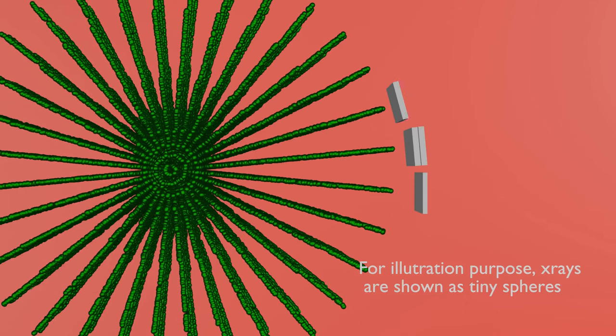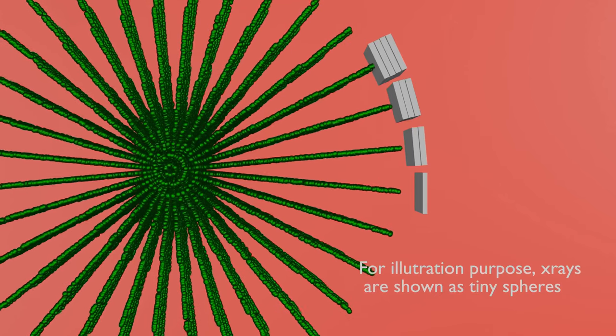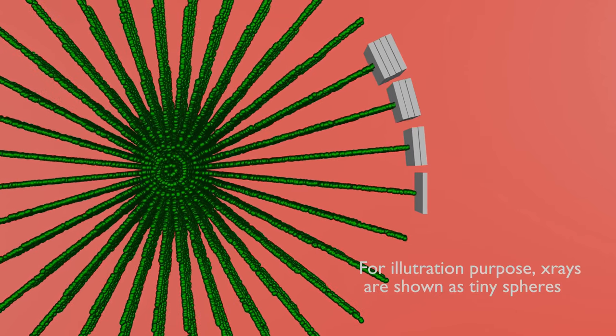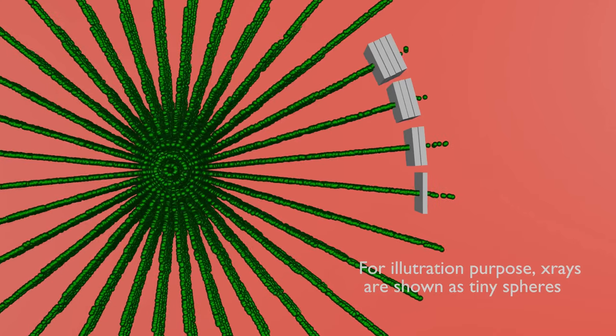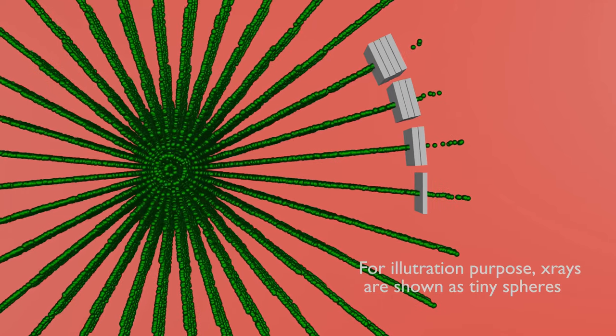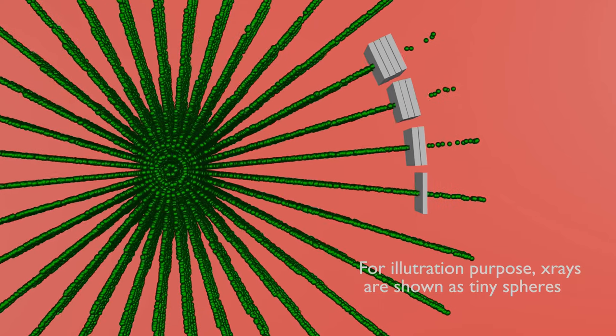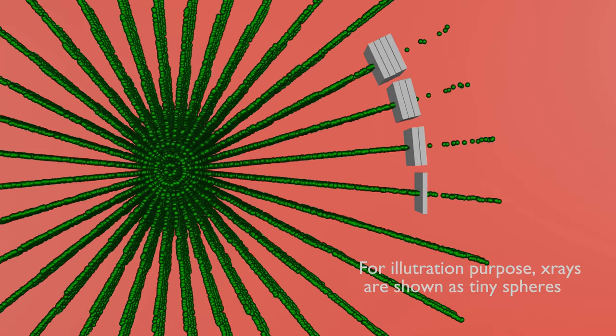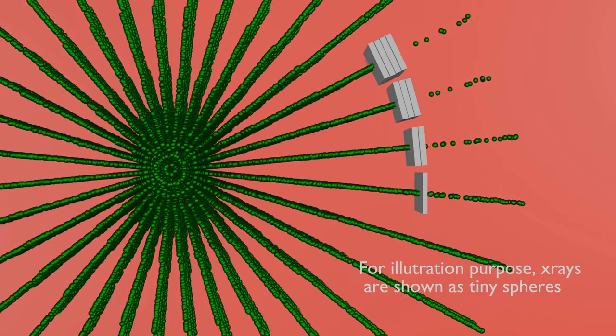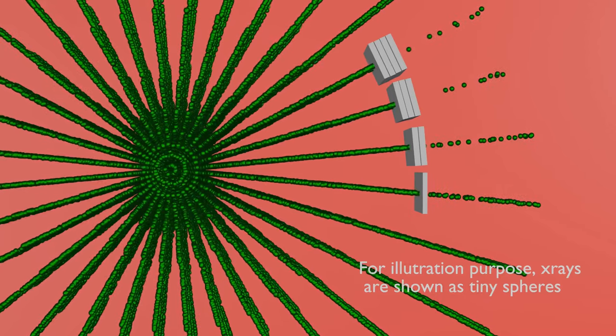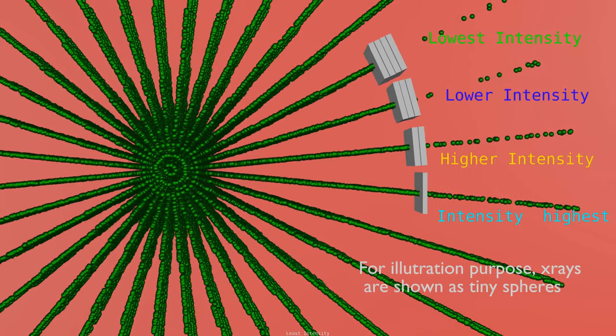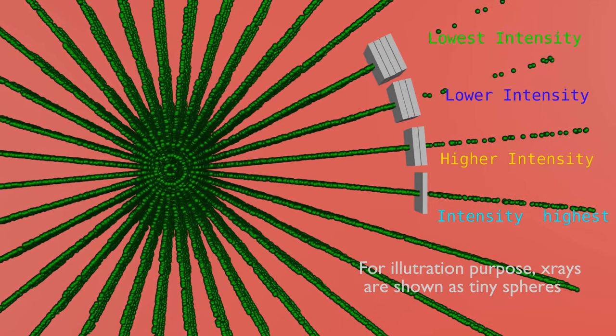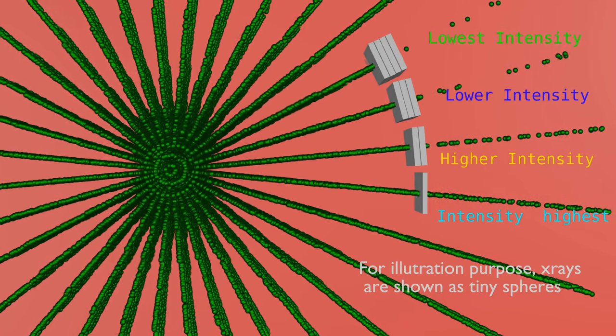Let's put varying thicknesses of matter in different directions. The resulting intensities of x-rays beyond these blocks of matter will not be equal. The direction in which thickness is more, attenuation will be more. And higher the attenuation, lesser will be the intensity.